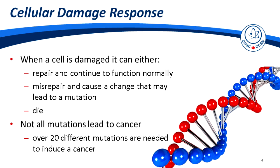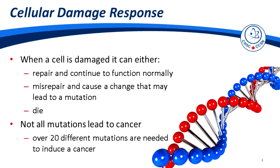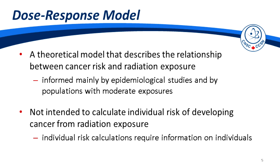Most of the time when radiation causes damage, the cell dies or is repaired. Very rarely, the cell is not repaired properly and possibly leads to a mutation. It's important to note that not all mutations lead to the development of cancer — in fact, it takes on the order of 20 mutations before a cancer develops. Based on this understanding, a dose-response model was developed to describe how the risk of cancer varies with radiation dose.